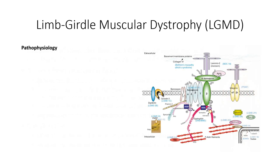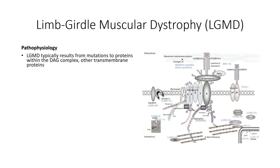For many of the identified mutations, the pathophysiology leading to limb-girdle muscular dystrophy is fairly well understood. Some of the mutations are to proteins found within the dystrophin-associated glycoprotein complex, primarily to the sarcoglycan proteins. These mutations are thought to have a similar etiology to the dystrophin mutations described earlier, causing direct disruption of the dystrophin-associated glycoprotein complex.